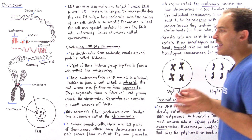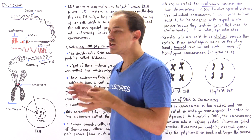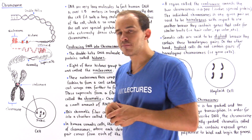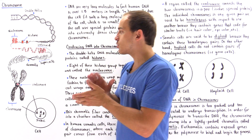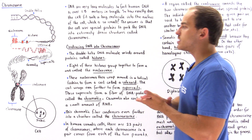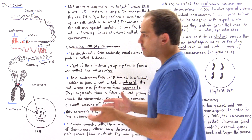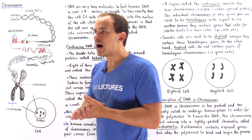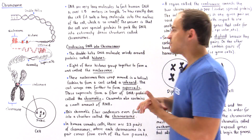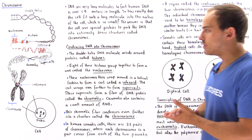Chromatin also contains a very small portion of RNA. A very small portion of the chromatin consists of RNA molecules, such as RNA polymerase, that is involved in DNA transcription, or RNA transcription, as we'll see in just a moment.